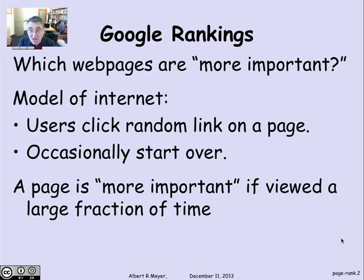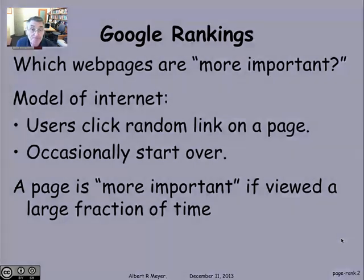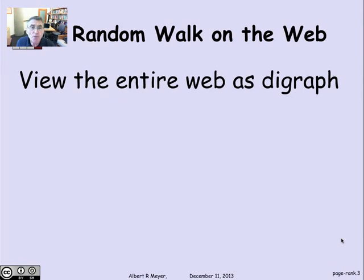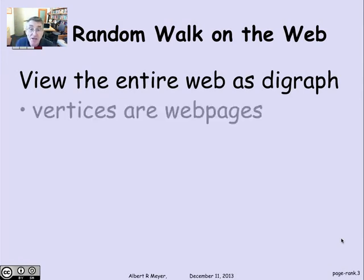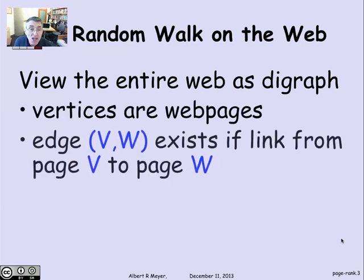And we want to argue or hypothesize that a page is more important when it's viewed a large fraction of the time by these random browsers and random users. So to be formal, we're going to take the entire World Wide Web, trillions of vertices as a digraph, and there's going to be an edge from one URL to another, from V to W, if there's a link from the page V to the page W, or the URL W.